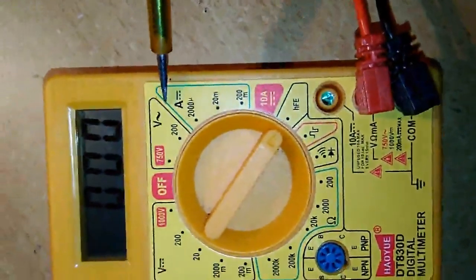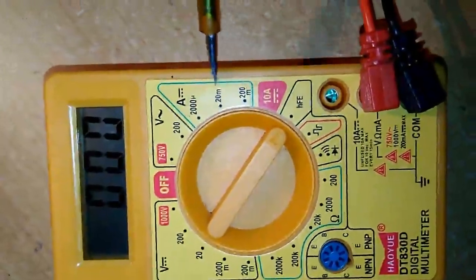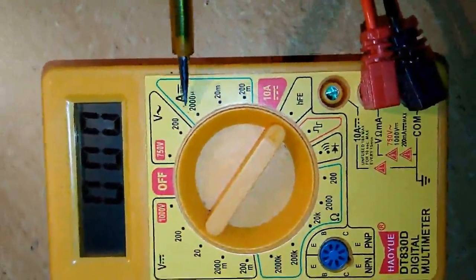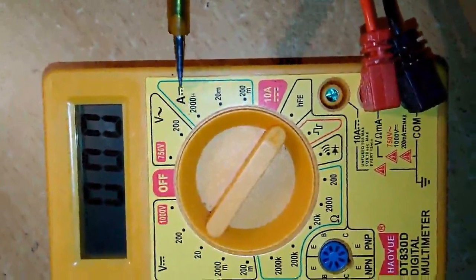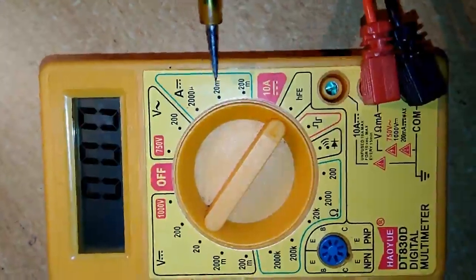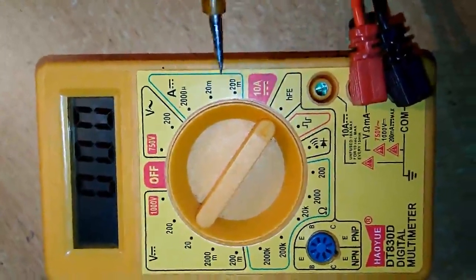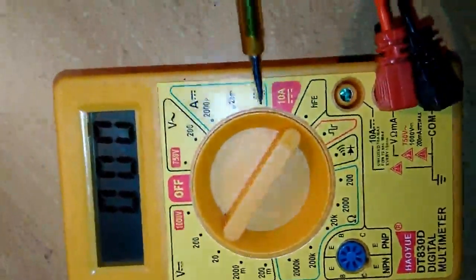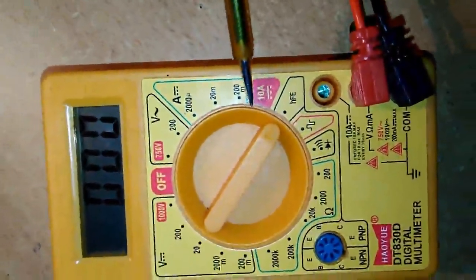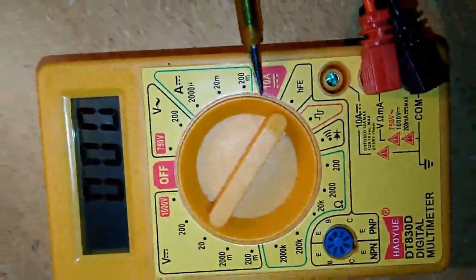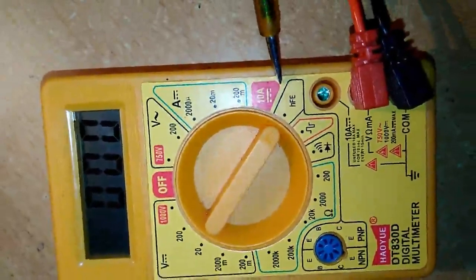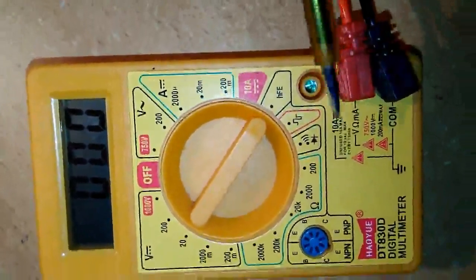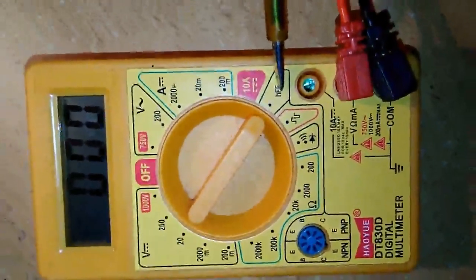Here we can measure DC current. This is in micro, some micro milliamperes you can measure. Then here it can measure maximum up to 10 ampere DC current.